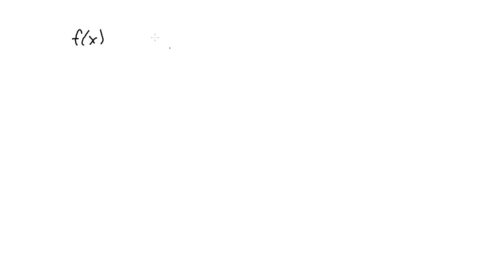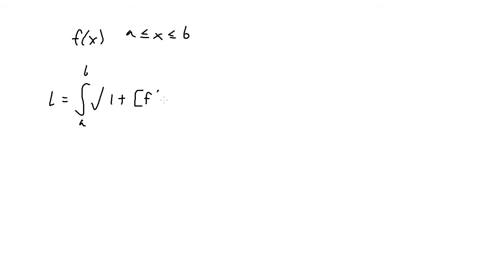Let's take a look at arc length. If we have a function f of x and we want to find the length of the curve from x bounds a to b, we can use the arc length formula. The arc length L equals the integral from a to b of the square root of 1 plus f prime of x squared, times dx.